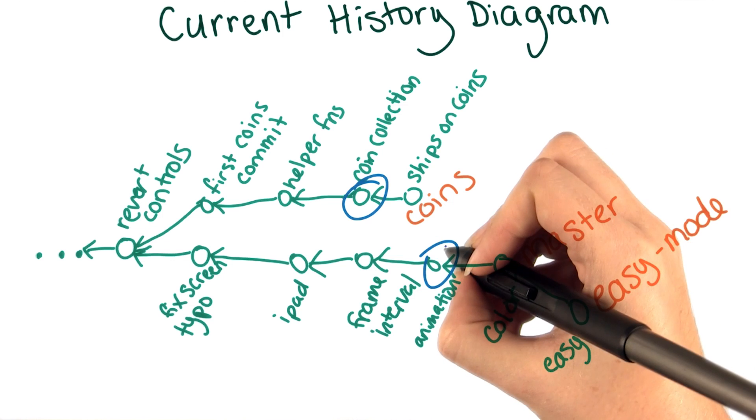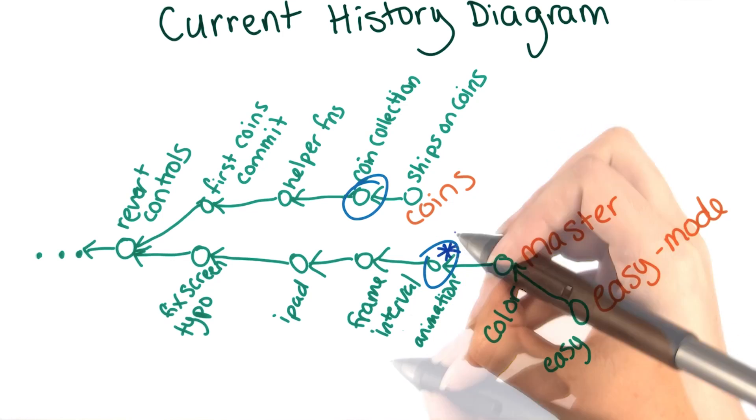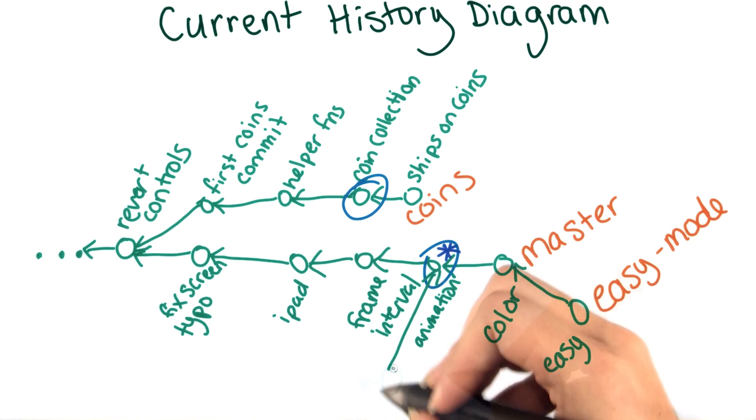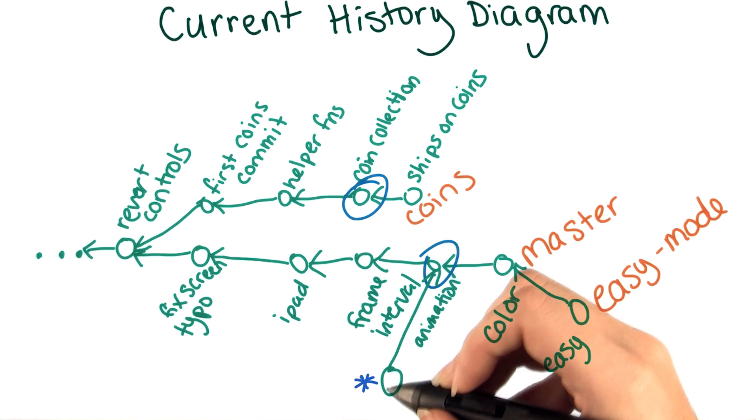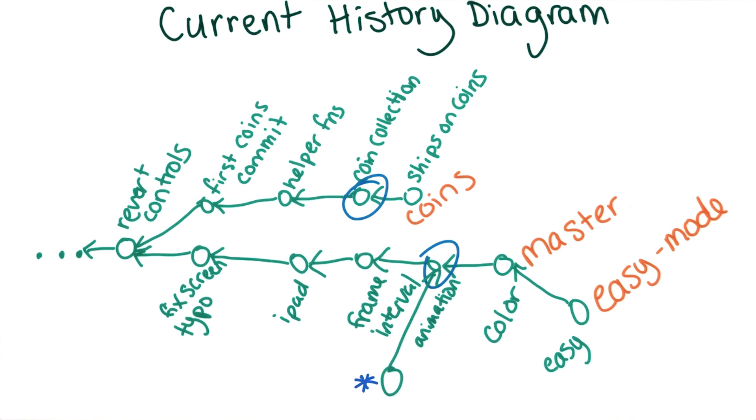Suppose we checked out this commit. Remember that we mark this with a star. And then we made a new commit from there, which would move head or the checked out commit to here. If you then checked out an existing branch, say master, the commit that you just made would be lost, unless you happen to have written down the commit ID, since it's not actually reachable by any of the current branches.